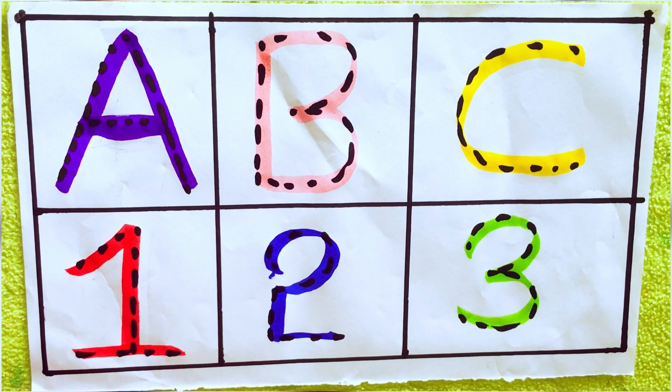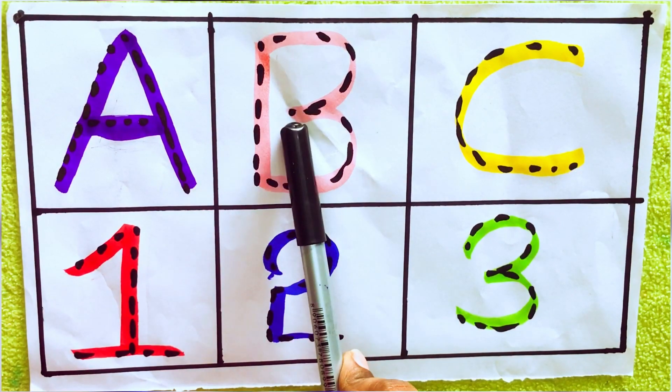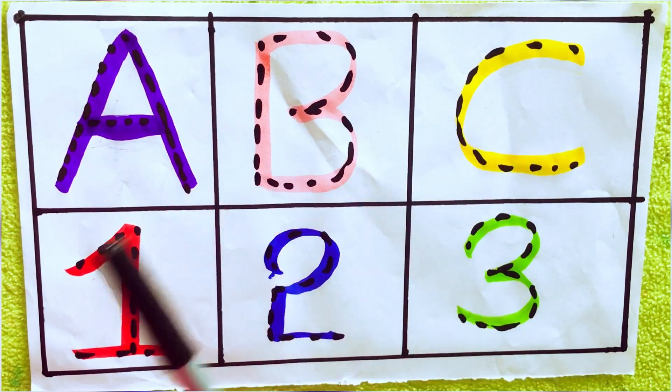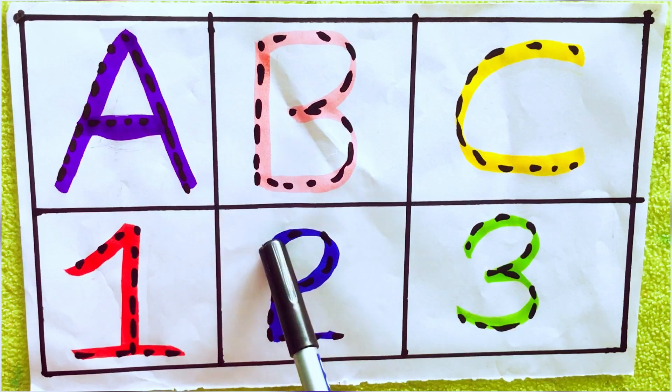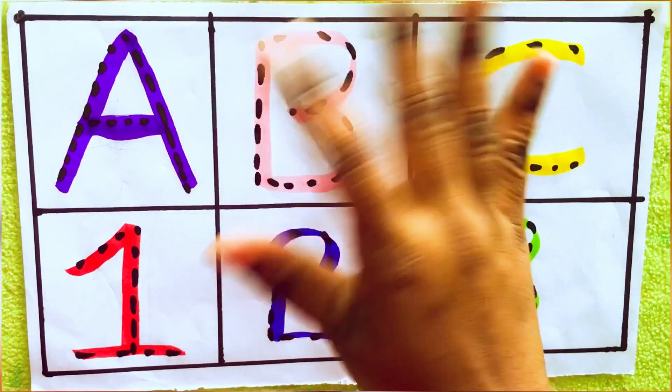One second learning alphabets and numbers: A, A for apple. B, B for ball. C, C for cat. One, O-N-E, one. Two, T-W-O, two. Three, T-H-R-E-E, three. Okay, bye kids.